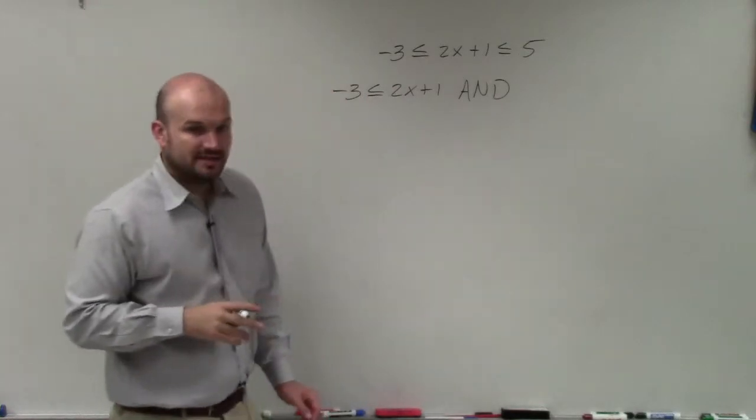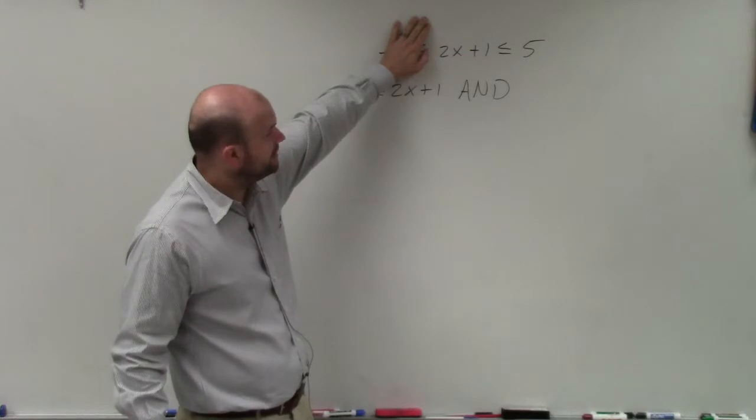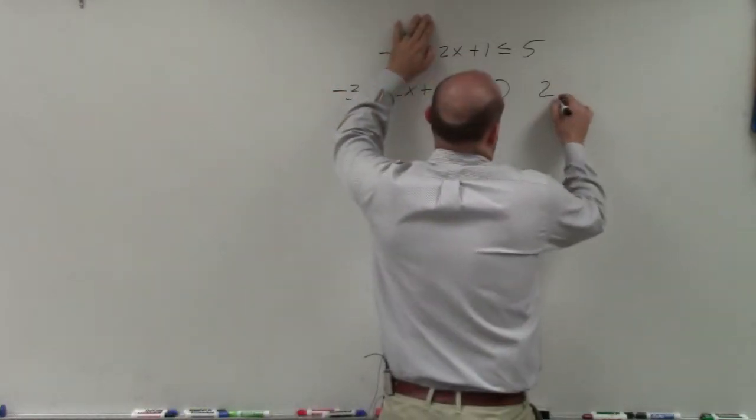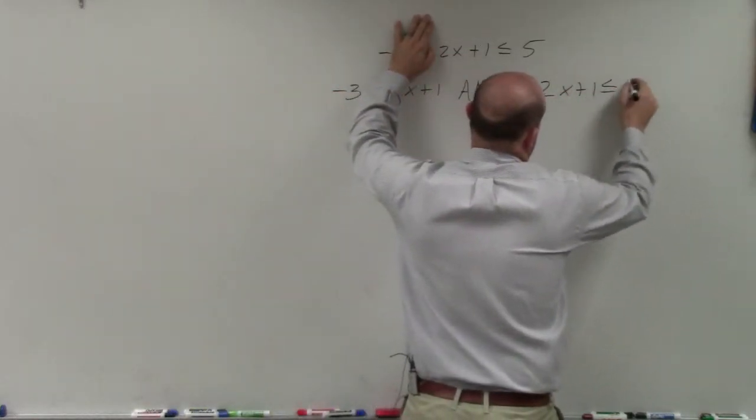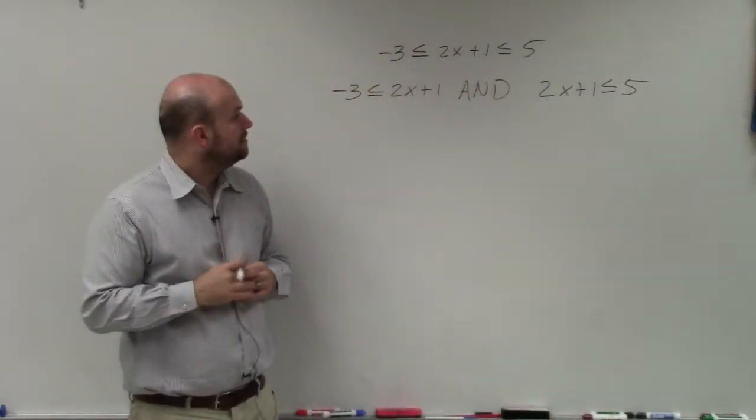And then the other inequality, you just put your hand over the other solution and inequality, and you have 2x plus 1 is less than or equal to 5. Now, you basically just go ahead and solve each inequality.